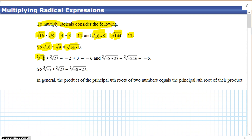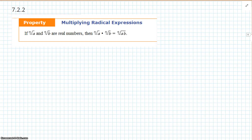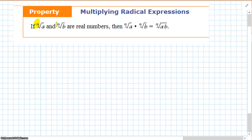Let's look at the cube roots. The cube root of negative 8 times the cube root of 27 is the same thing as negative 2 times 3, which is negative 6. And the cube root of negative 8 times 27 is the cube root of negative 216, which is still negative 6. So the rule is: the product of principal nth roots of two numbers is equal to the principal nth root of their product. In easy terms, if the root or the index is the same, we can multiply everything underneath the radical sign and combine like terms.